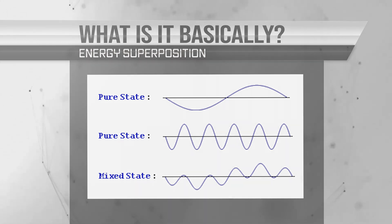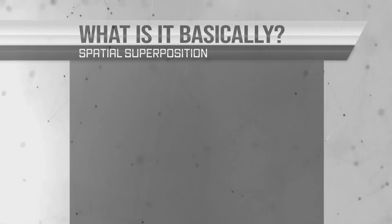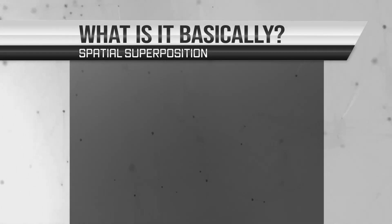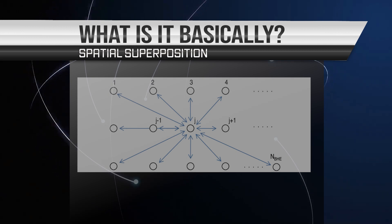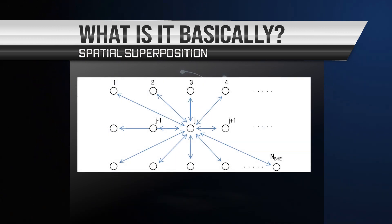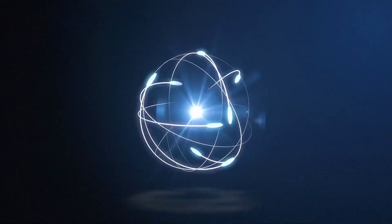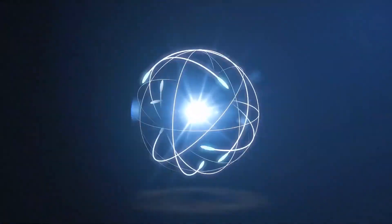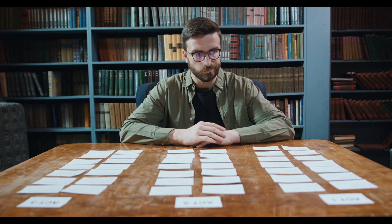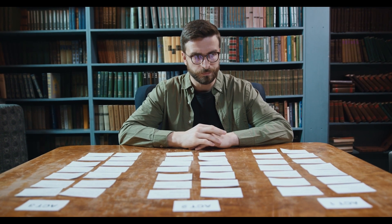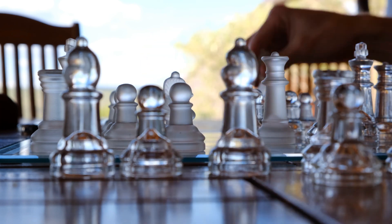Similarly, a particle can be in multiple locations simultaneously, which is known as spatial superposition. Superposition is a strange and counterintuitive concept that is difficult to understand using our classical intuition.